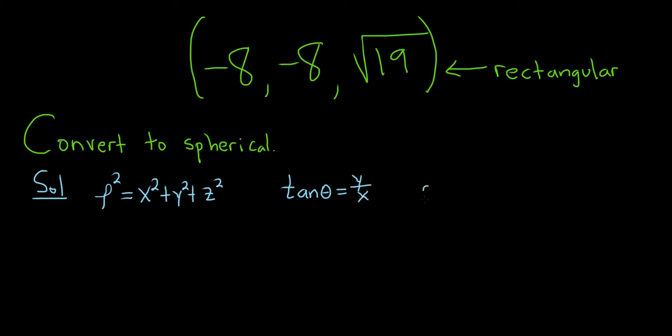And last, we have that phi is equal to the arc cosine of z, all divided by the square root of x squared plus y squared plus z squared.